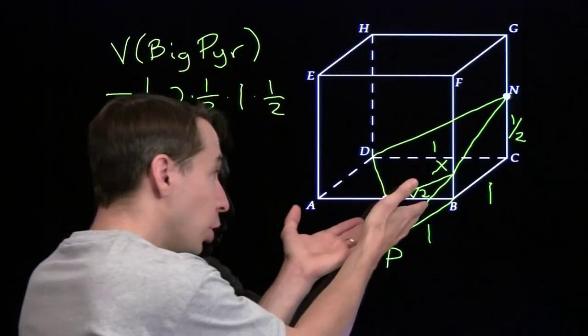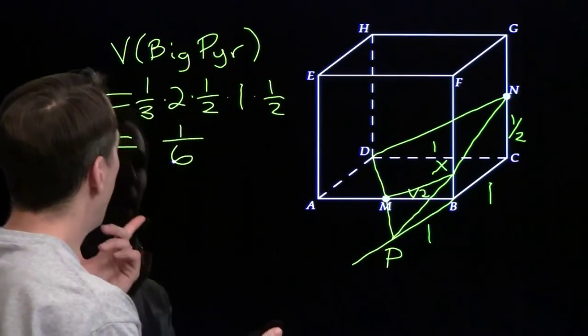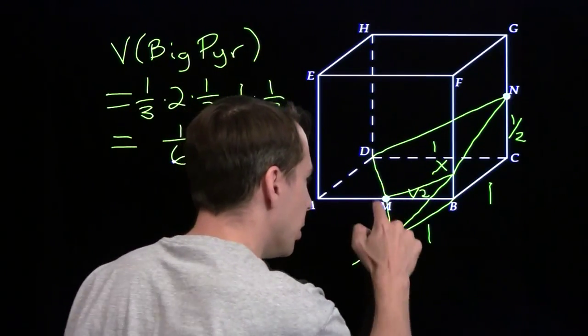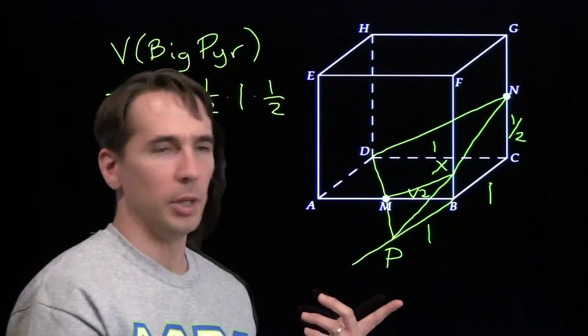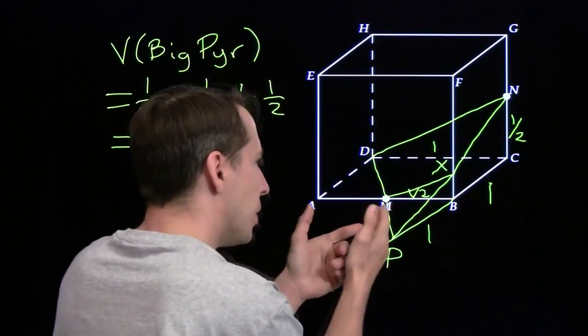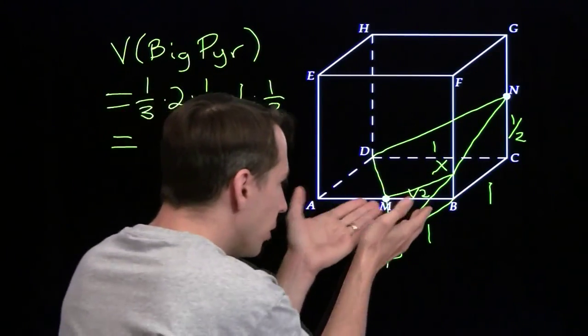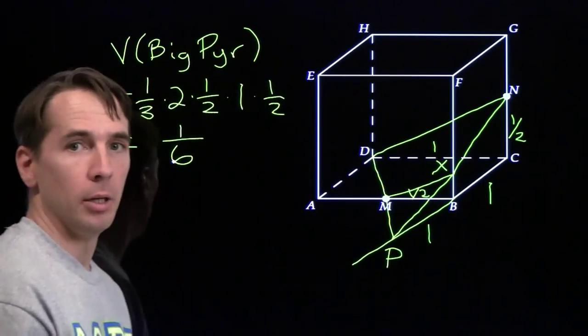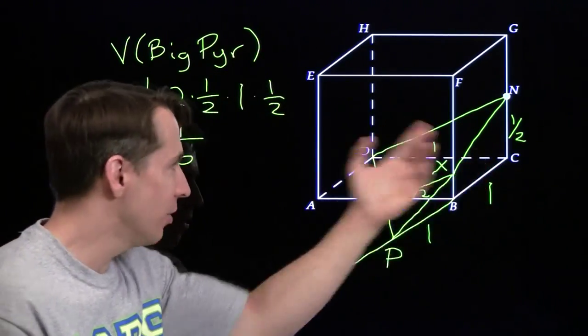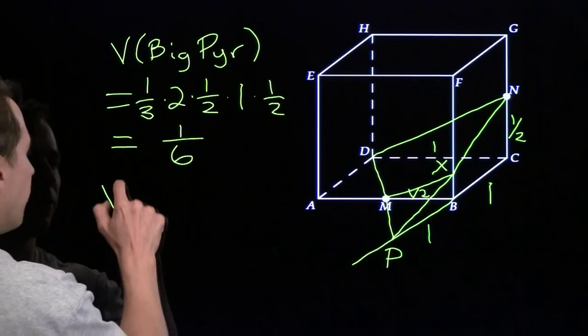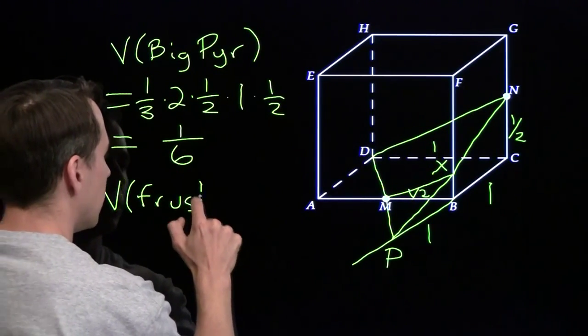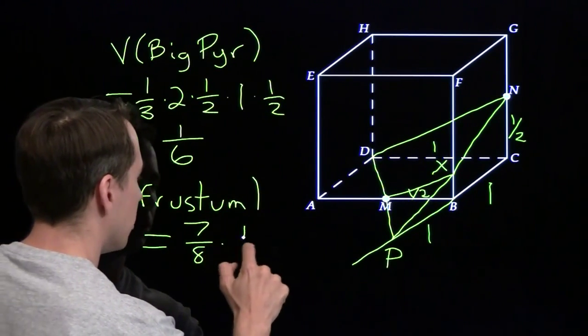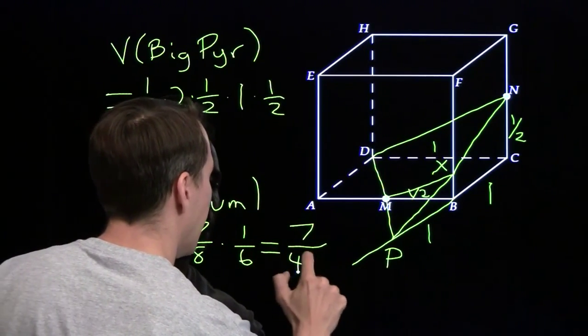Now, to get the volume of the frustum, we find the volume of the little pyramid and then subtract that out. And we're left with the frustum. Now the volume of the little pyramid, the little pyramid is similar to the big pyramid. And its sides are half the corresponding sides of the big pyramid. So the volume of the little pyramid is 1 eighth, the volume of the big pyramid. That means the frustum is the other 7 eighths of the big pyramid. So the volume of the frustum is 7 eighths, the volume of the big pyramid, which is 7 48ths.